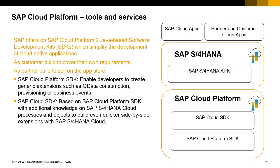SAP offers a number of tools, mainly software developer kits, that can be used to create these applications more quickly. With the SAP Cloud Platform SDK, we can create generic extensions for OData consumption and provisioning of business events. With the Cloud SDK, built on the SAP Cloud Platform SDK with additional knowledge of S/4HANA Cloud processes and objects, it's even easier and quicker to build side-by-side extensions. Customers can cover their own requirements, and even partners can build applications to sell on our App Store.